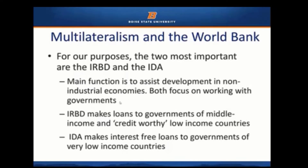Both institutions focus on working with governments. The IBRD makes loans to governments of middle-income and creditworthy low-income countries. A consultant for the IBRD will evaluate a country's financial infrastructure and corruption levels to determine whether investment projects are likely to be successful. The International Development Association makes interest-free loans to governments of extremely poor countries. So both the IBRD and IDA make loans to governments as opposed to private entities.